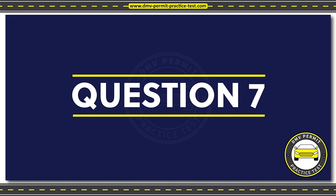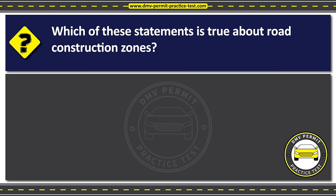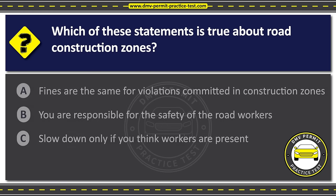Question seven. Which of these statements is true about road construction zones? Option A: Fines are the same for violations committed in construction zones. Option B: You are responsible for the safety of the road workers. Option C: Slow down only if you think workers are present. The correct answer is Option B: You are responsible for the safety of the road workers.